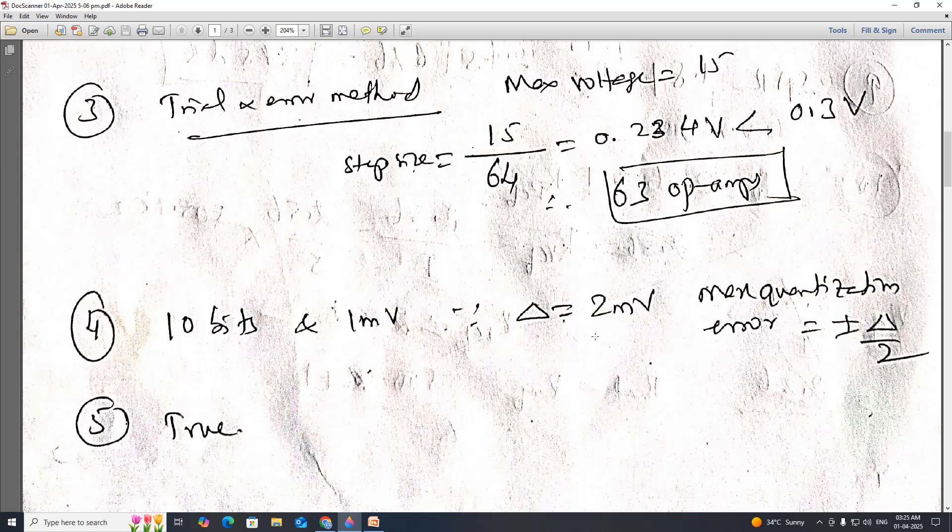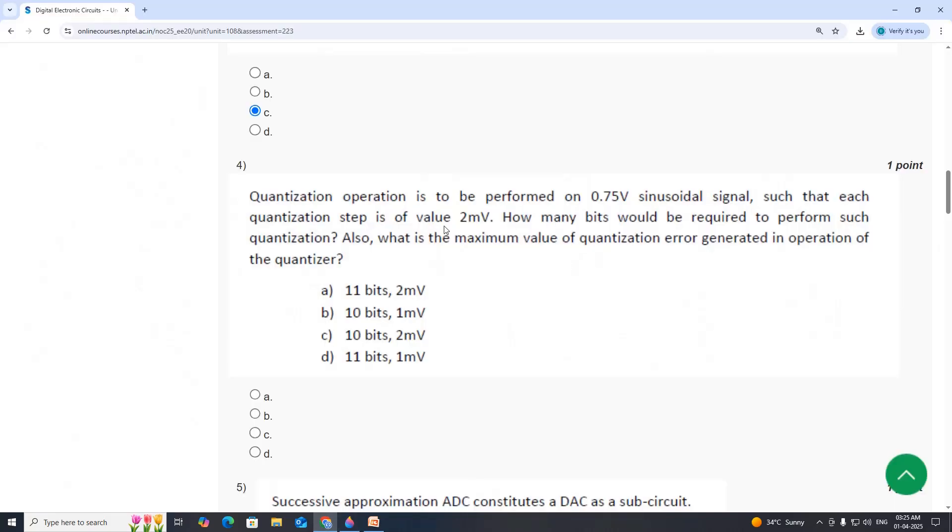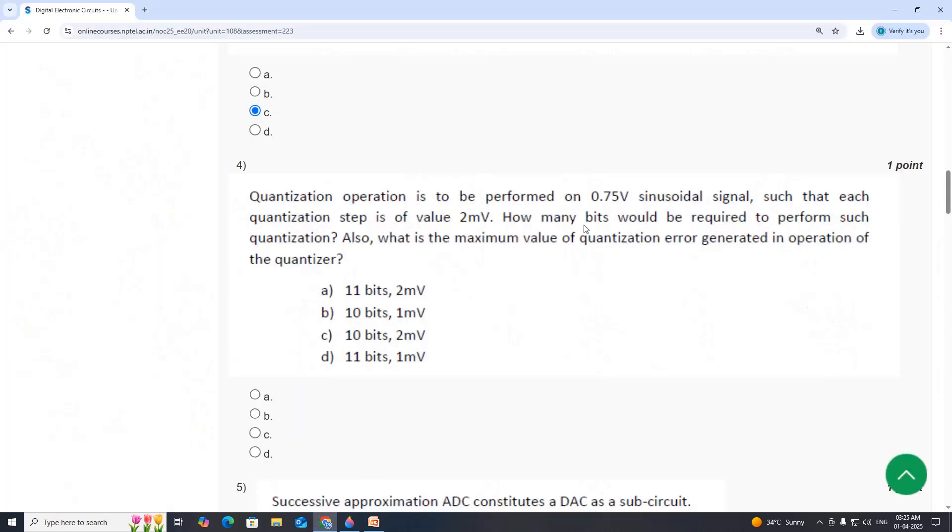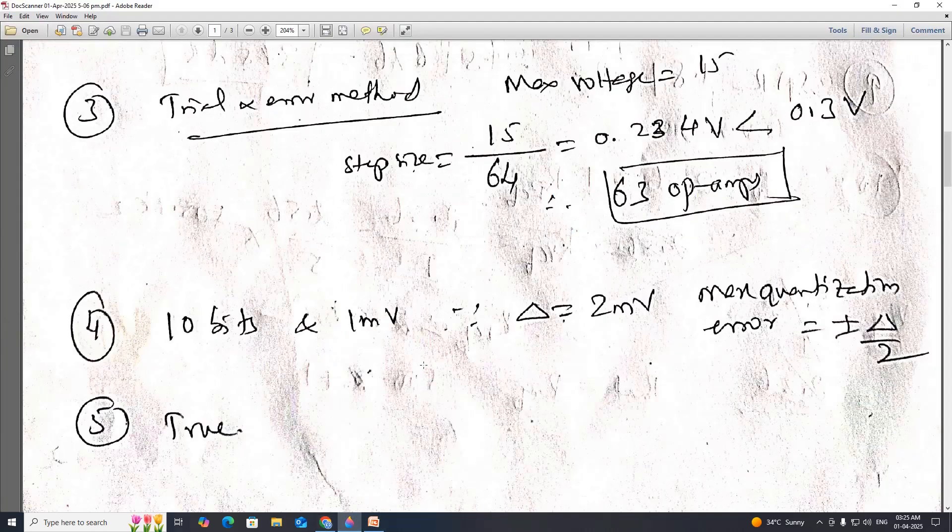So step size value is 2mV, and therefore delta by 2, plus or minus delta by 2 is 1mV. We can find out based on the step size. We will get option B. The formula is step size equal to 2mmax divided by number of representation level L, that formula I have used, which I have not shown here in this.